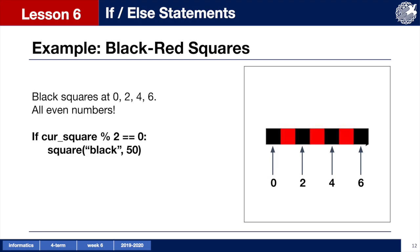Now let's think of a way we can make this happen. We want every other square to be black. So that means we want square 0, 2, 4, 6 and etc to be black. What do these numbers have in common? They are all even. We can use this to write a condition for our if statement.